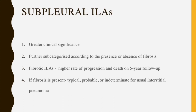Location is most important for prognosis: non-subpleural ILA is usually non-progressive, while subpleural ILA is more progressive. Subpleural ILAs have more prognostic significance and are further assessed as fibrotic or non-fibrotic. If fibrotic, there is more risk of progression and more risk of mortality at five-year follow-up. These patients must be looked into carefully, and if fibrosis is present, further categorization into typical, indeterminate, or probable UIP is done per ILD guidelines.